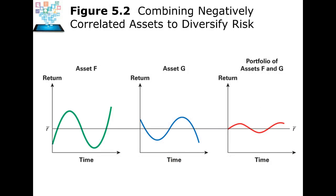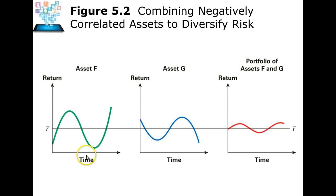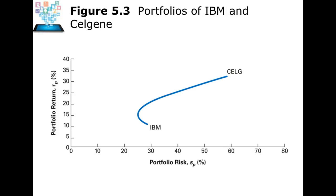If we combine negatively correlated assets to diversify risk, we can have two risky assets — F and G — but together they reduce risk because when F is going down, G is going up. Together, they reduce the overall risk of your portfolio, and that's what we're looking for.